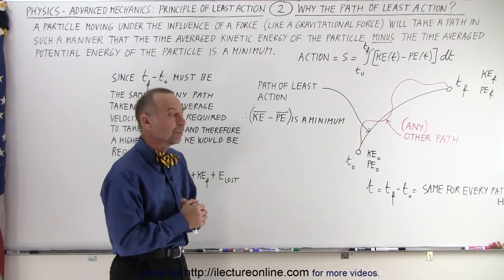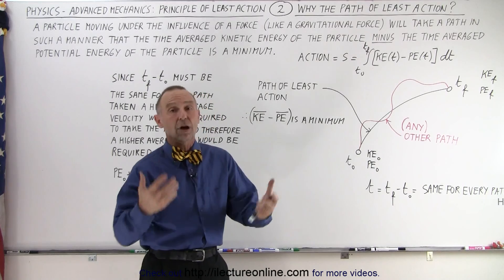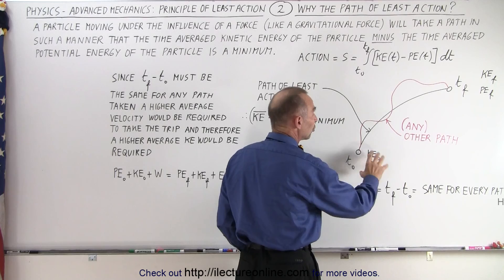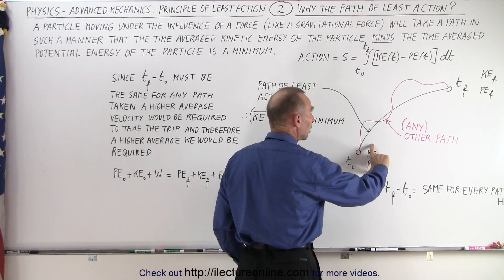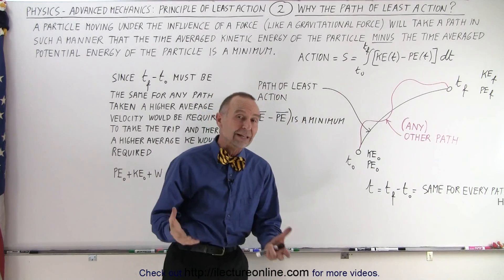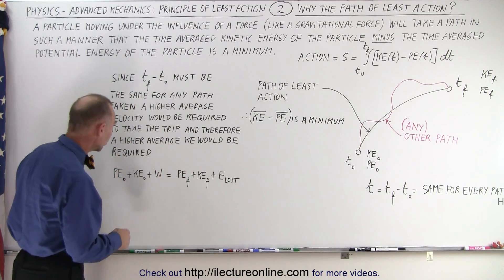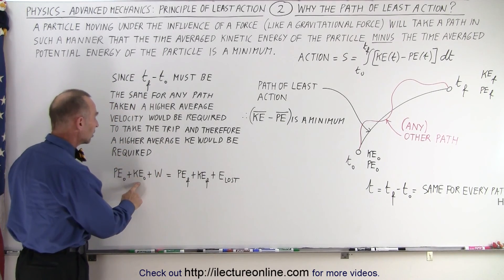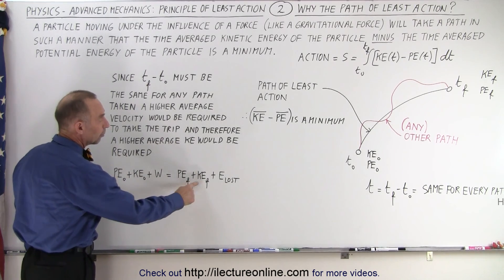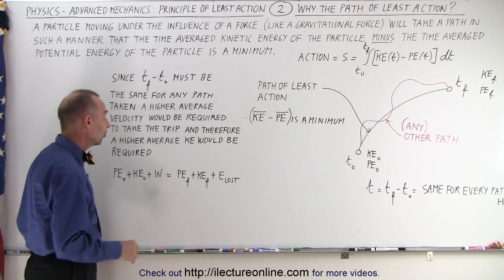But we can be assured that if no work is put into the system and no energy is lost due to friction or anything like that, then the initial total energy — the sum of kinetic plus potential energy — will equal the final total energy, the sum of the final kinetic plus potential energy. We can go back to a very familiar equation where the initial potential energy plus the initial kinetic energy plus any work put into the system will equal the final potential energy plus the final kinetic energy plus what energy might have been lost due to friction or resistance.